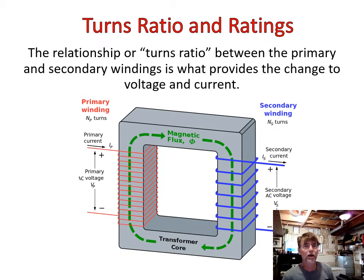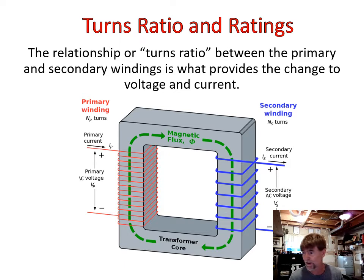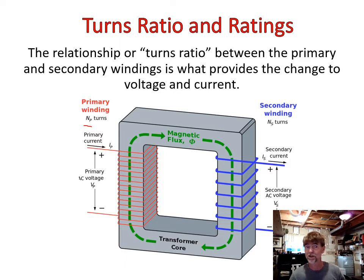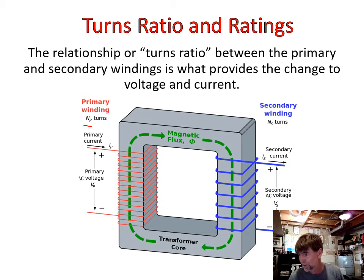Here's an image we've seen before. The relationship, or turns ratio — a term I've thrown out there a few times — is the ratio between the primary and the secondary windings, and it's what provides the change in voltage or current. What I really want to highlight on this slide are the labels. N subscript P refers to the number of turns of the primary winding, and N subscript S refers to the number of turns in the secondary coil.